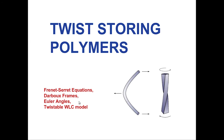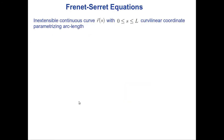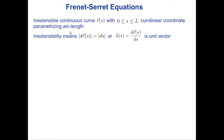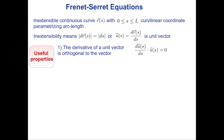We consider a continuous model of polymers described by a function r(s), where r is the position of the polymer along a continuous curve and s is a curvilinear coordinate parametrizing the arc length. Inextensible means that the derivative of r with respect to s is a unit vector, so the length of the increment dr equals ds. We restrict ourselves to inextensible polymers.